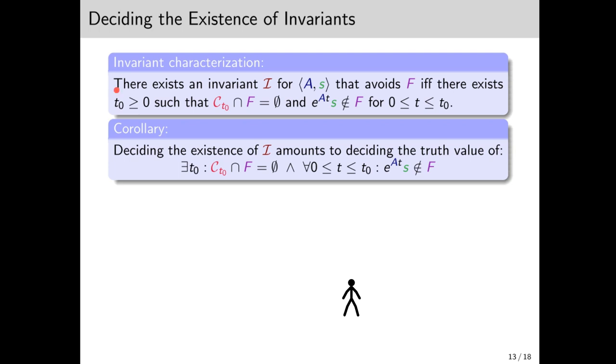So now we know that there exists an invariant that contains the orbit and avoids the target, if and only if there exists T0 such that CT0 is disjoined from F, and the tail doesn't hit F. We can express this in the following sentence. And now, the question is, of course, whether we can decide the truth value of this sentence.